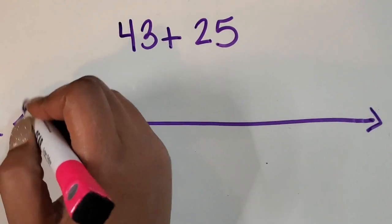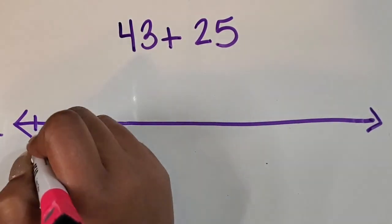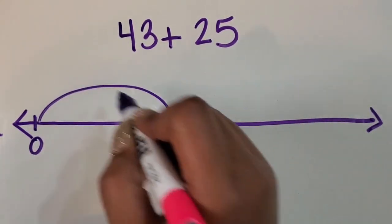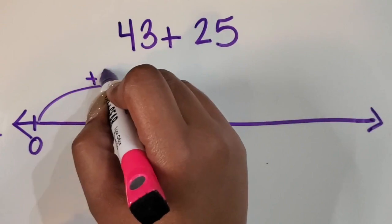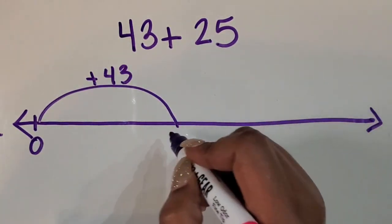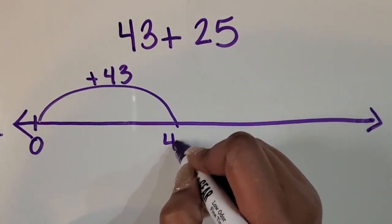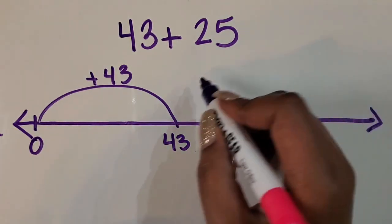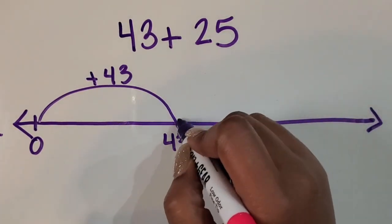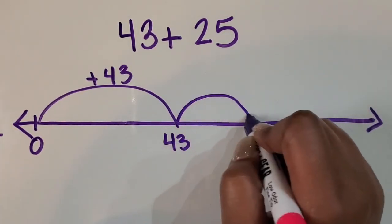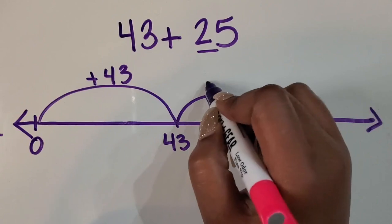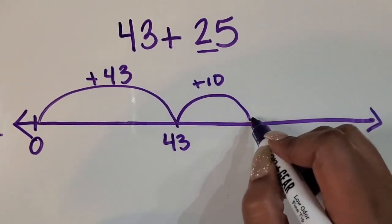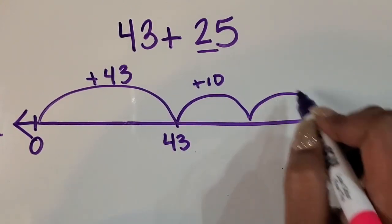I'm going to start with zero, then add on 43, so I know that gives me 43. Then I'm going to add on the 25. I'm going to break up the 20 into 10 and 10.